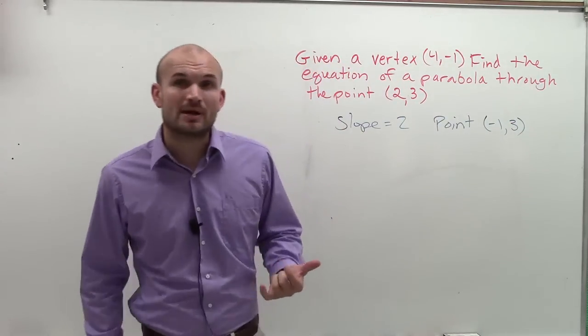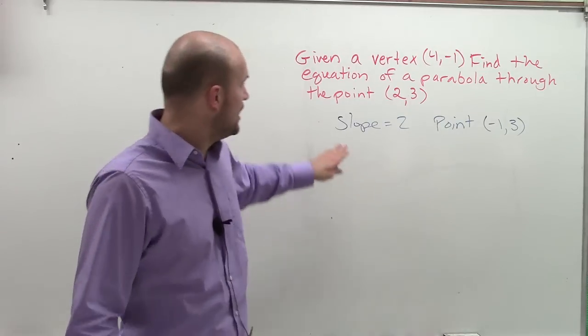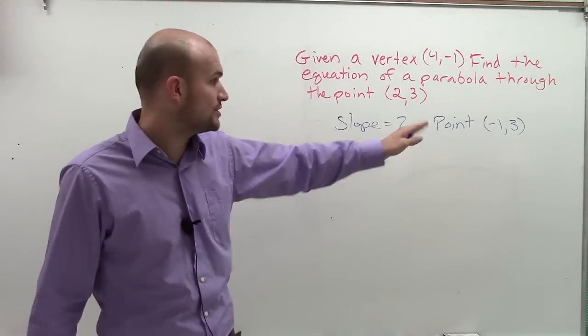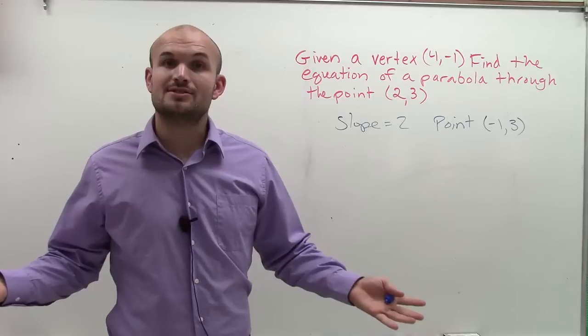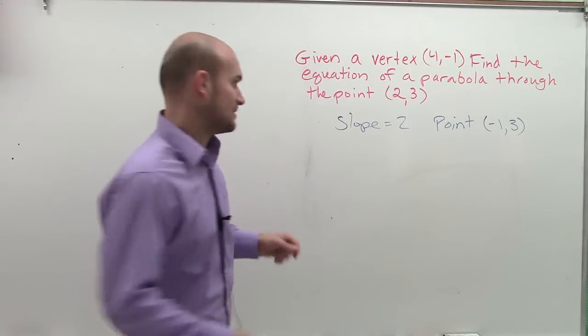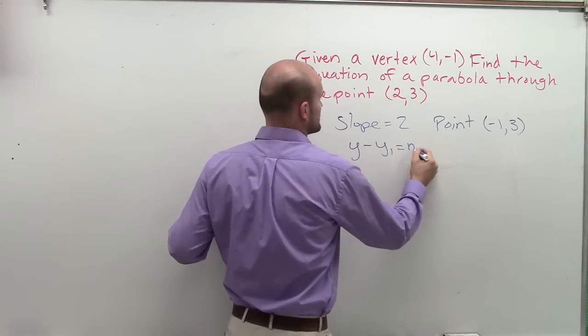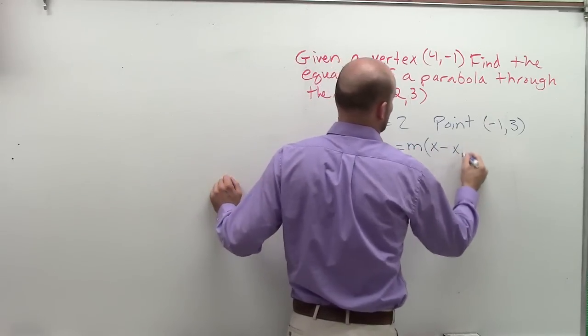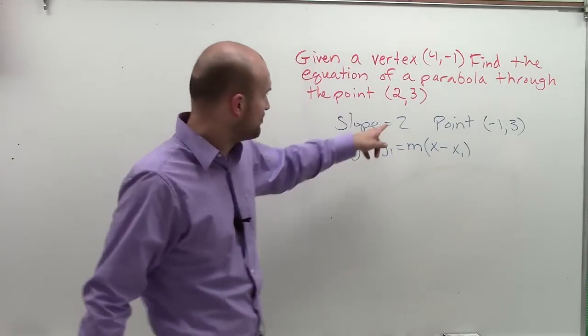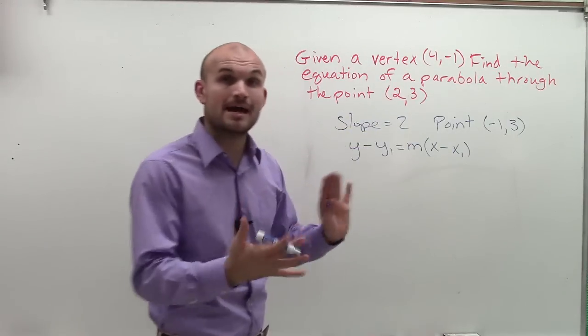Remember, if I say find the equation, find the linear equation of a line that has a slope 2 and a point, what we'd like to do is use the point slope method. The point slope equation is y minus y1 equals m times x minus x1. What we do is plug in 2 for our slope, because m represents slope.